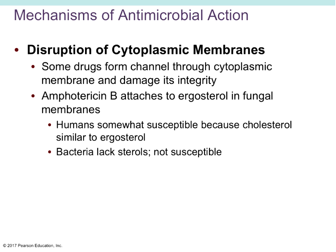Some drugs disrupt cytoplasmic membranes by forming channels that damage membrane integrity, allowing too many things to get in and out. Amphotericin B attaches to ergosterol in fungal membranes, causing the plasma membrane to become leaky so its contents spill out. However, amphotericin B can also be problematic for human cells because ergosterol looks a lot like cholesterol, which is embedded in the plasma membranes of our eukaryotic cells, and it can also kill human cells.